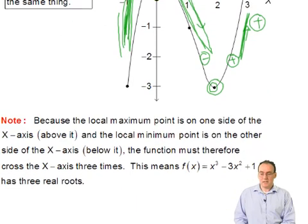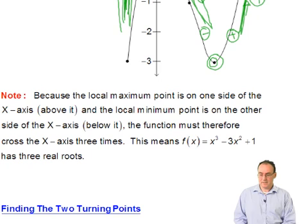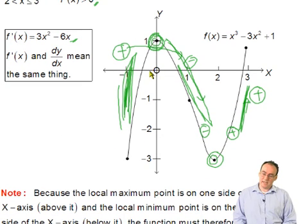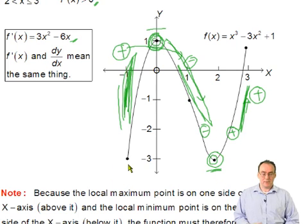Because the local maximum point is on one side of the x-axis, and the local minimum point is on the other side of the x-axis, the function must therefore cross the x-axis three times. You can see here that you have your max above the x-axis up here, you have your min below the x-axis down here, and for that reason, the graph has to pass through the x-axis three times.